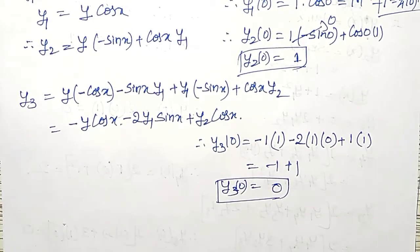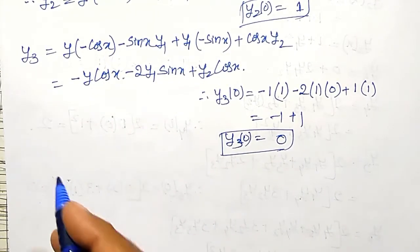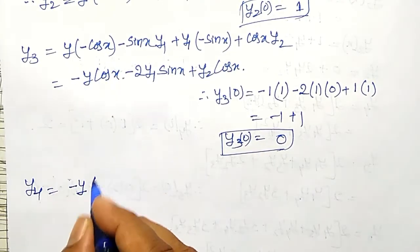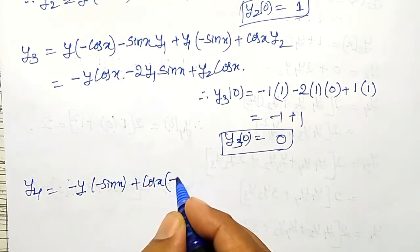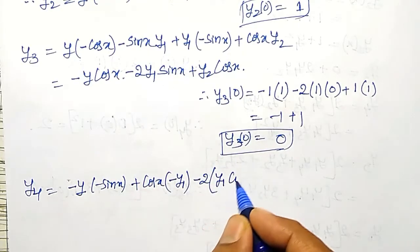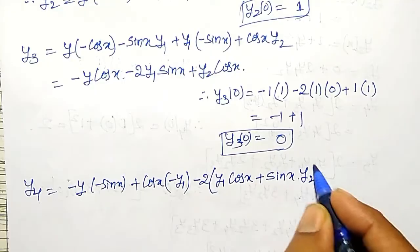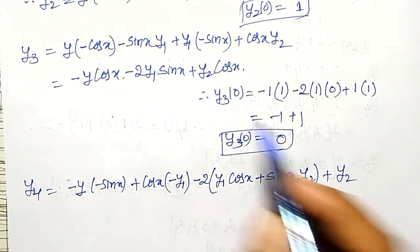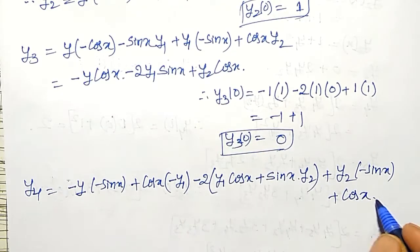Since we want up to the term containing x to the power 4, I also need to find y4. Differentiating again and applying the product rule: y4 equals y into sin x minus y1 into cos x, minus 2 times the derivative of y1 into sin x, which gives y1 cos x plus sin x into y2, plus y2 into cos x differentiated as minus y2 sin x plus cos x into y3.